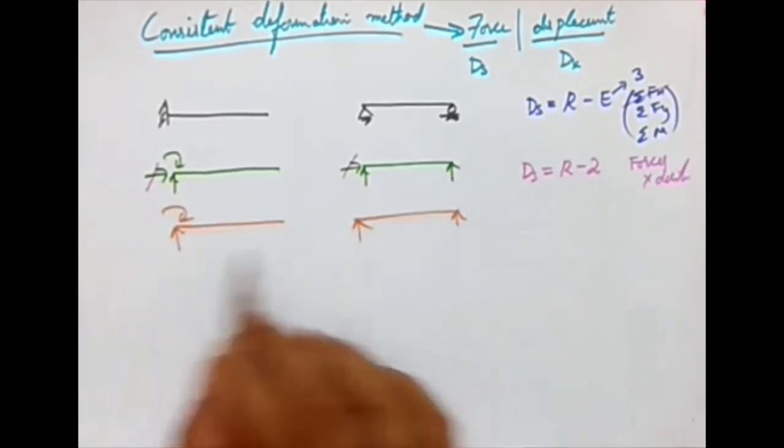To solve this, we convert the primary structure into manageable substructures using the principle of superposition — dealing with one load at a time. The first decision is to choose the basic structure: either a cantilever or a simply supported beam configuration.